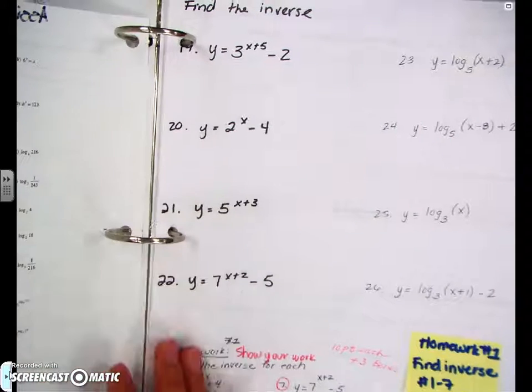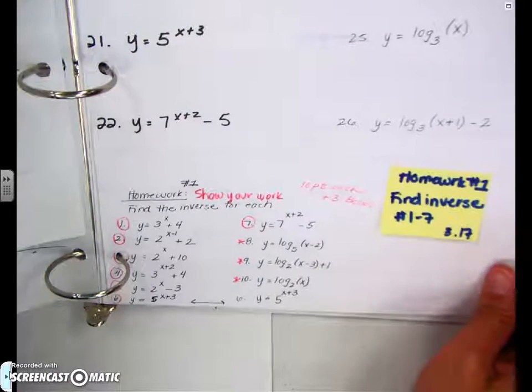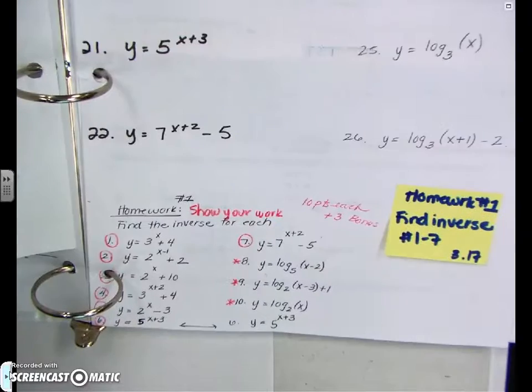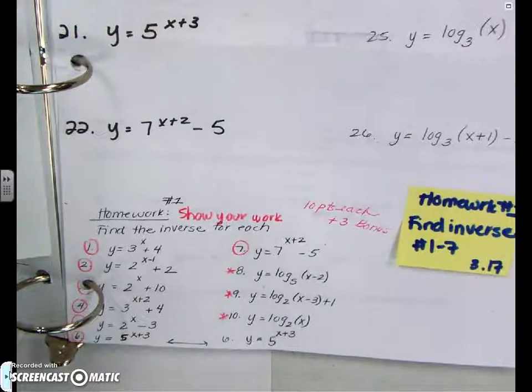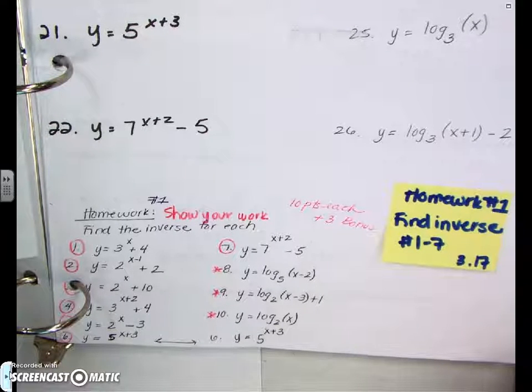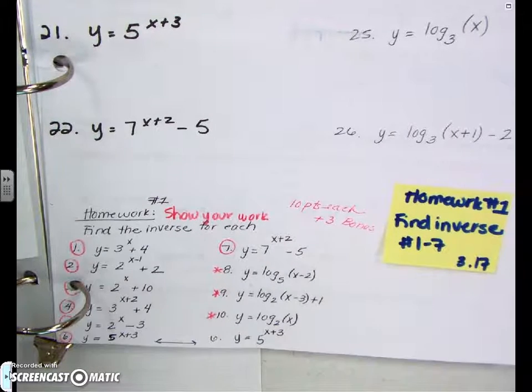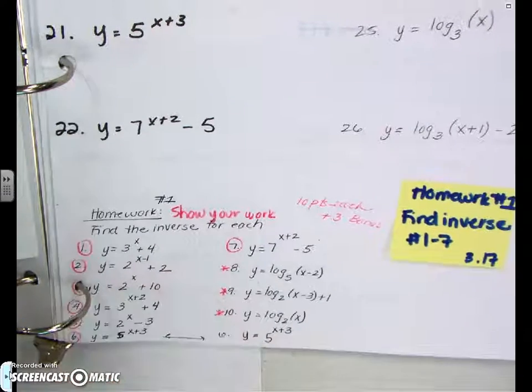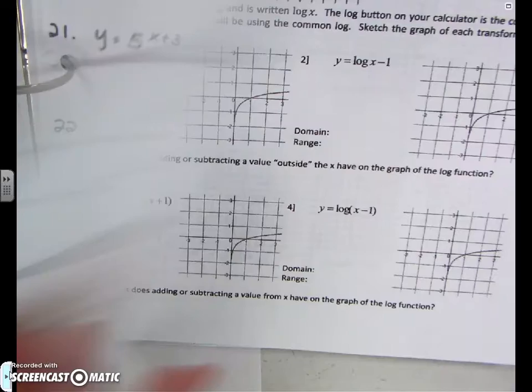The next assignment is homework number one. We took notes in class. There is a video up, also on Google Classroom. You had homework number one, which was to find the inverse of the seven questions here. You could have eight, nine, and ten as extra credit.